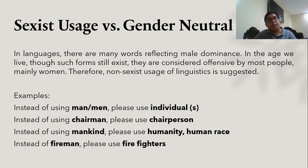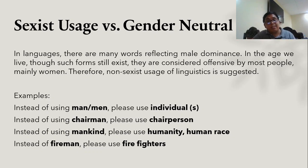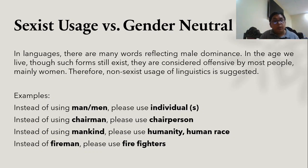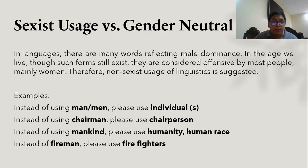We also discover sexist usage versus gender-neutral usage. In languages, there are many words reflecting male dominance, and though such forms still exist, they are considered offensive by most people, mainly women. Therefore, non-sexist usage of language is suggestive. For example, instead of 'man' or 'men,' we can use 'individual.' Instead of 'chairman,' we can use 'chairperson.' Instead of 'mankind,' we use 'humanity' or 'human race.' Instead of 'fireman,' we can use 'firefighter.' That is the difference between sexist versus gender-neutral language.